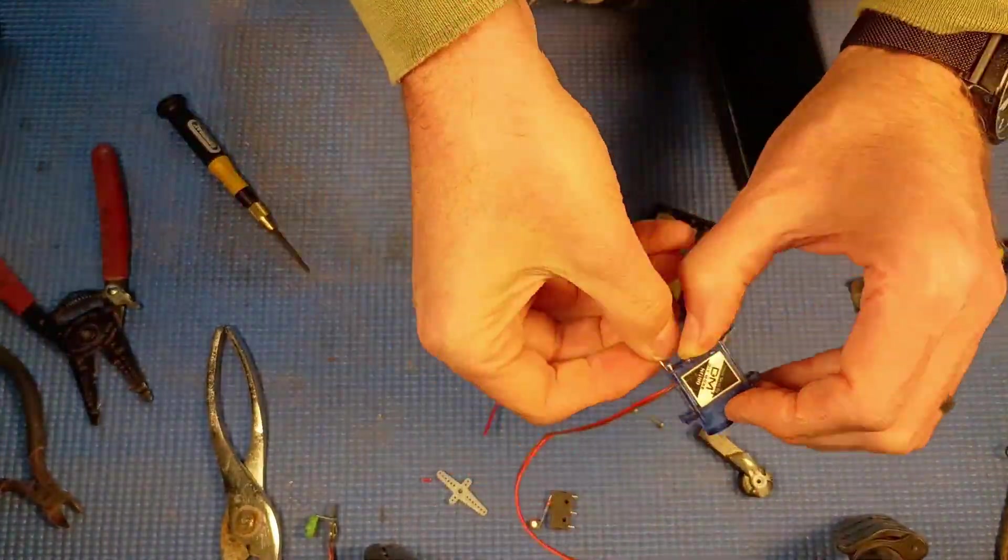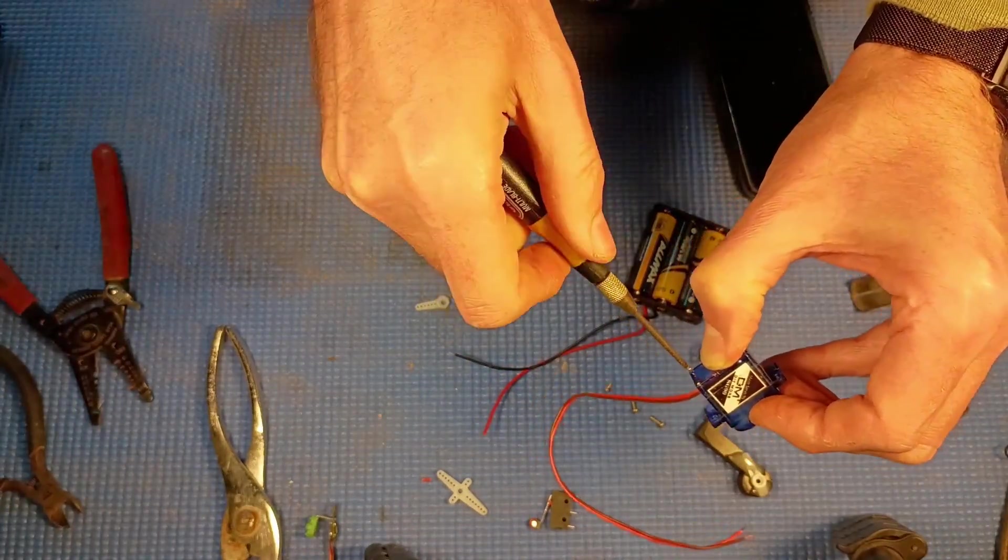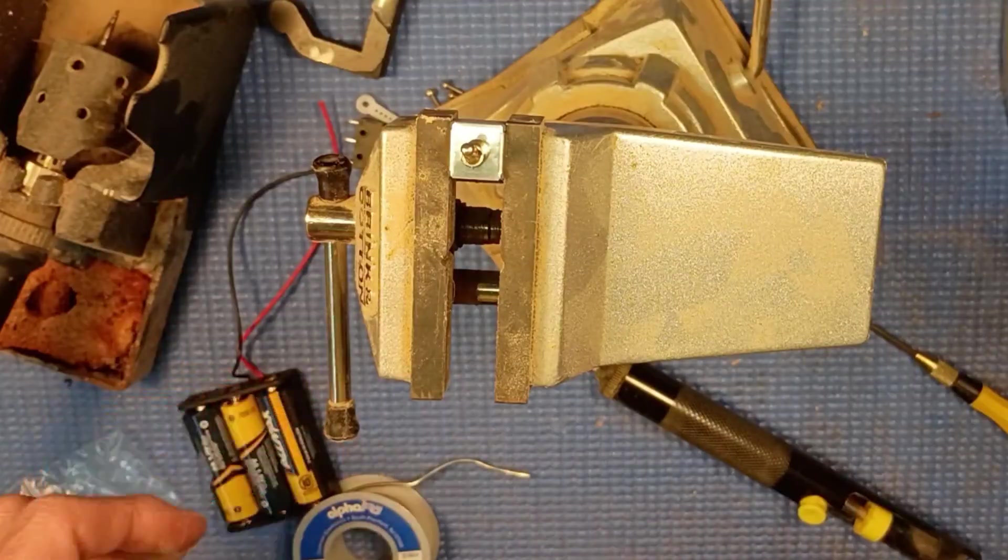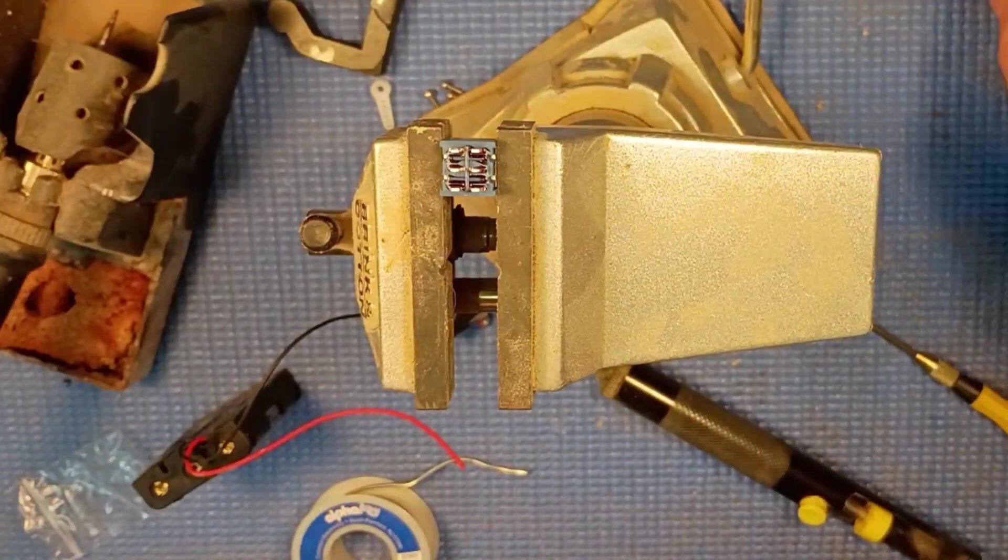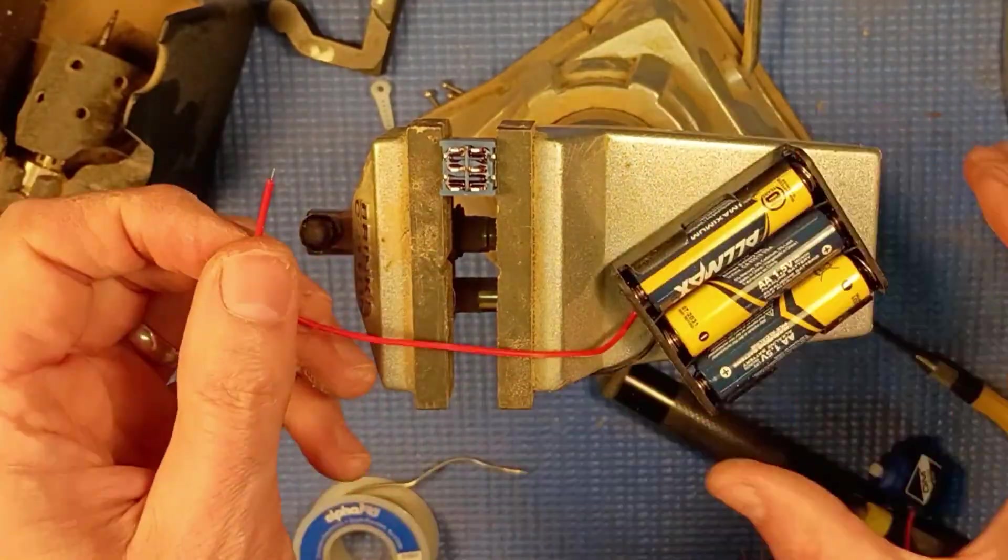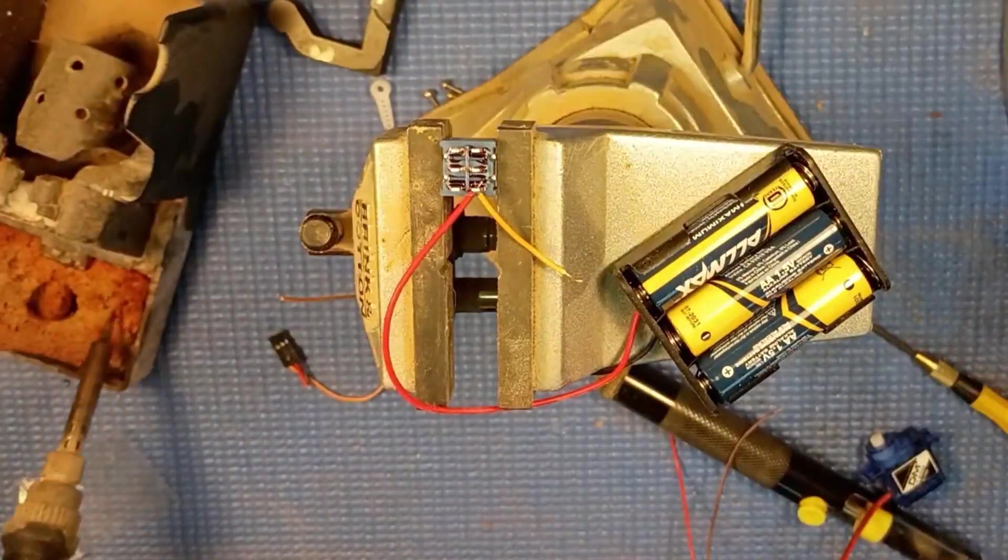You can see here I'm putting the servo box back together after removing that control board. Once we have that, we turn our attention to the circuit. Like I said, this is a DPDT switch. That stands for double pull, double throw.